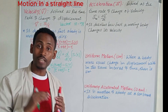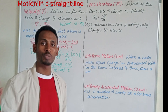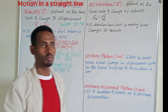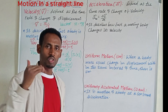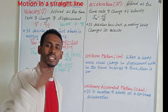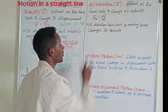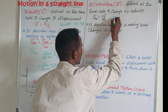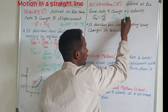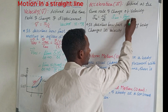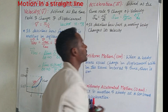Acceleration is the time rate of change of velocity. We are going to measure acceleration with respect to the change in velocity. When the change in time approaches zero, the change in velocity divided by the change in time gives you the instantaneous acceleration.